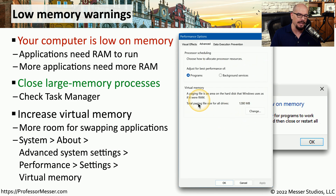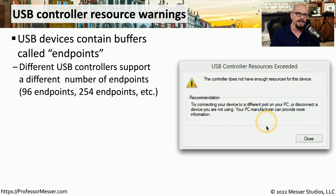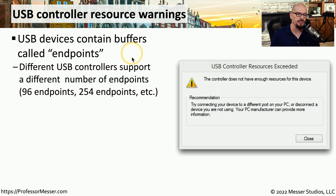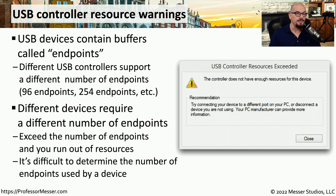You'll get a screen that allows you to either configure virtual memory to be automatically set, or you can specify exactly how much virtual memory you'd like to use. The USB devices we connect to our computer take advantage of buffers inside of our system called endpoints. Different USB controllers support a different number of total endpoints — your USB controller might support 96 endpoints, 254 endpoints, or some other value, and different USB devices will use a different number of endpoints.